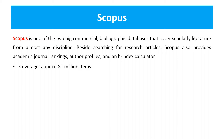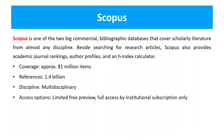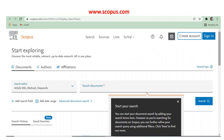Scopus covers around 81 million items and you can find around 1.4 billion references in the Scopus database. It is multidisciplinary. You can view its full access by institutional subscription only, or a limited free preview is available. It was developed by Elsevier. This is the window screen of Scopus — you can go there via the website scopus.com.